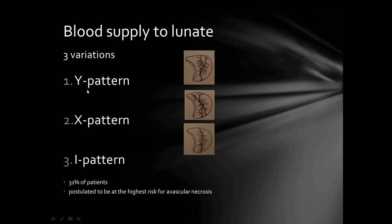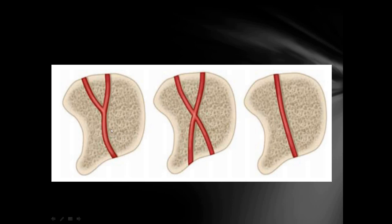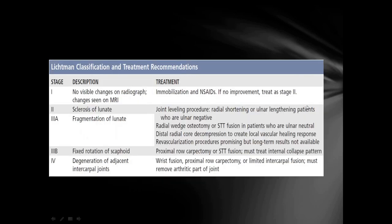The three types of blood supply patterns to the lunate are: the Y pattern, the X pattern with dual small arterioles, and the I pattern. Thirty-one percent of patients with the I pattern of blood supply to the lunate are postulated to be at higher risk for avascular necrosis. There are two types of classification for Kienböck's disease.